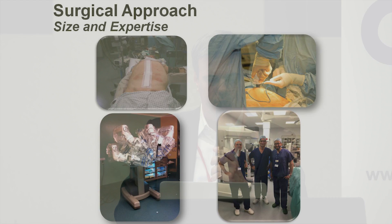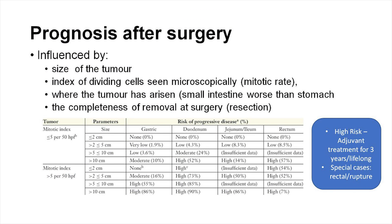After surgery, when the tumour is taken out, you want to look at whether someone gets further treatment. That's decided based on the size of the tumour, how many cells are dividing, where it has arisen, and the completeness of removal at surgery. The stomach is probably the best prognosis, while other areas — for example the rectum — are difficult to treat and have a slightly worse prognosis.